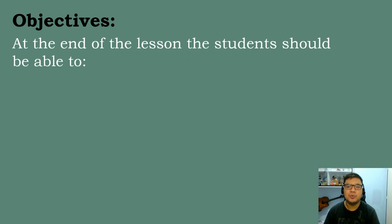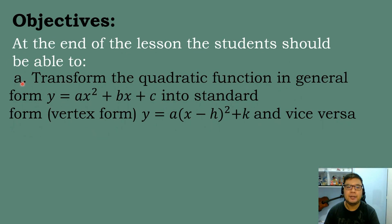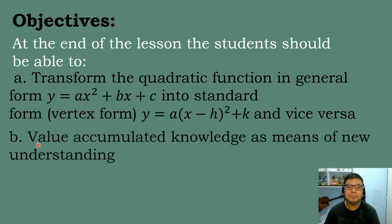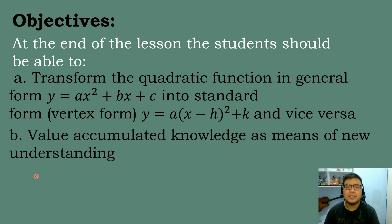These are the following objectives we need to attain for today's topic. Letter A: transform the quadratic function in general form y = ax² + bx + c into standard form y = a(x − h)² + k, and vice versa. And Letter B: value accumulated knowledge as a means of new understanding.